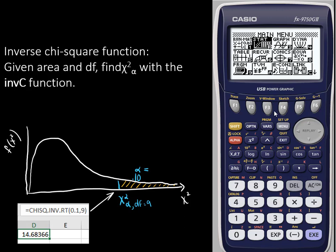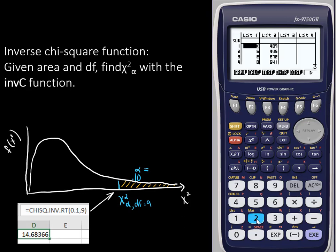In the Casio, in the main menu go to 2 for statistics, then go to the distribution menu under F5. Choose F3 for chi and INVC.